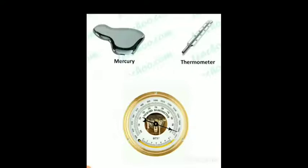Mercury is used in thermometers and barometers because of its high density and uniform expansion at different temperatures. Both instruments show uniform expansion at different temperatures.